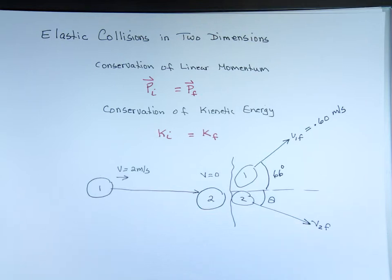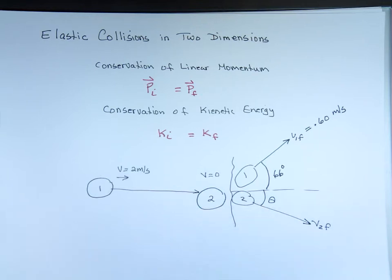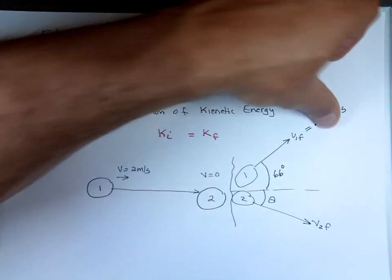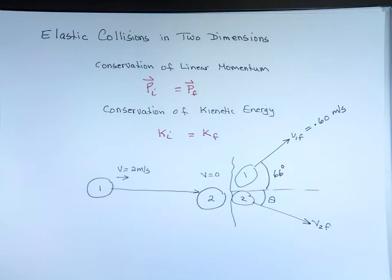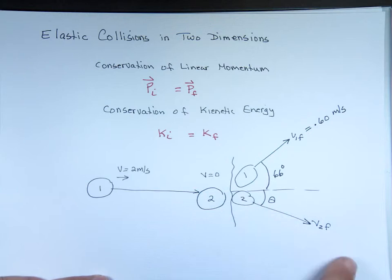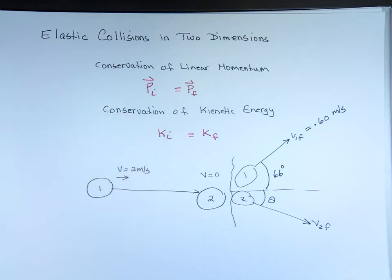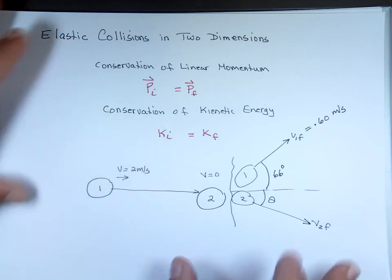What's the velocity of stone two? I'm looking for two things. By giving you the speed of stone one and its angle, you now have only two unknowns — the speed and angle of stone two. That makes the math two equations by two unknowns. The process won't change. Since this is an elastic collision, we have conservation of kinetic energy, so let's begin with that.